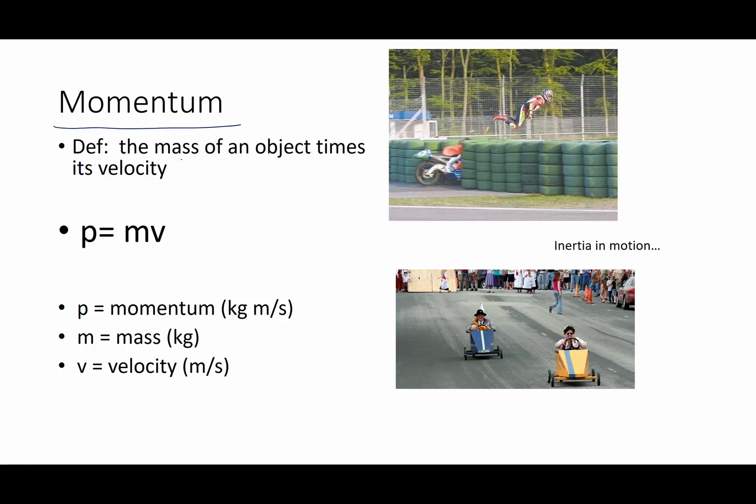Momentum is defined as the mass of an object multiplied by its velocity. Momentum is m times v where lowercase p is the common symbol for momentum measured in kilogram meters per second, mass in kilograms, and our old friend velocity in meters per second.